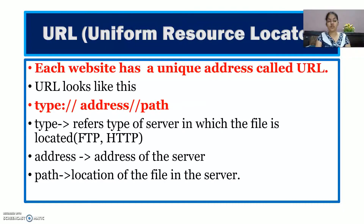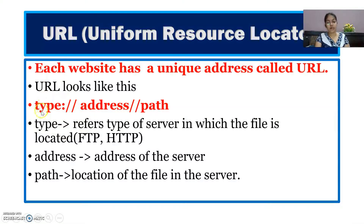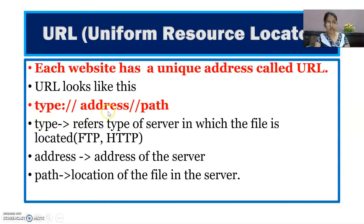Next is the Uniform Resource Locator, or URL. Every website or web page that we open has a separate address, and that address is called the URL. The syntax of a URL looks like this: first comes the type, meaning which type of server you are using — by default the type is the HTTP protocol. Then comes the address of the server, followed by the path of the file's location on the server. For example, for the CBSE website: http://cbse.nic.in — and the path shows the specific file location on the server.